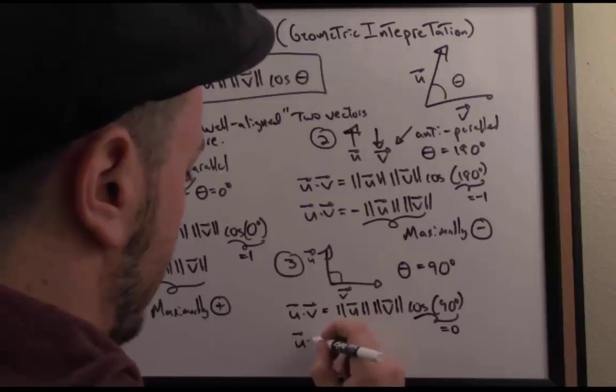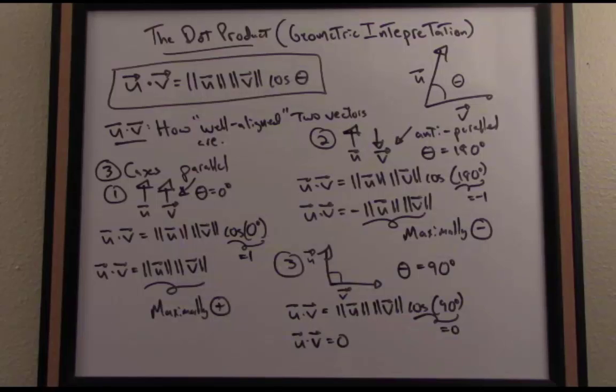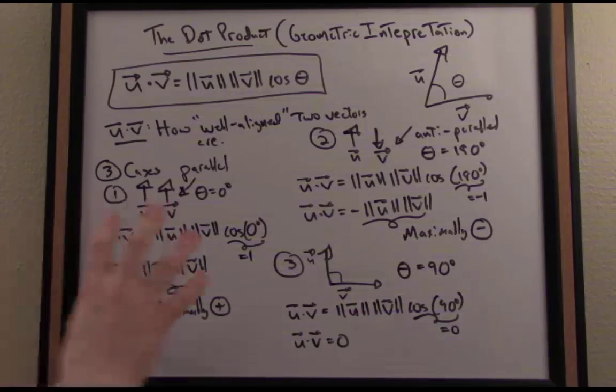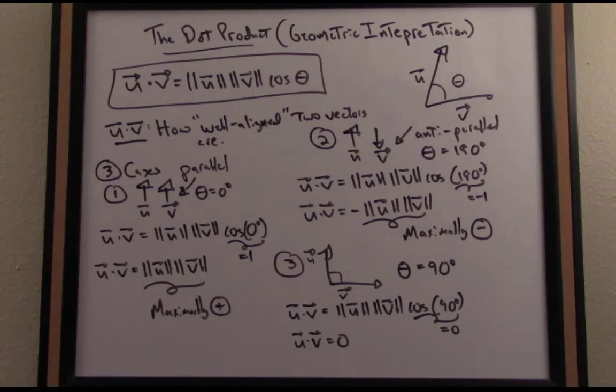So in this case, the dot product of u and v equals zero. We're exactly halfway in between. When they're parallel, we get a big positive number. When they're anti-parallel, opposite directions, we get a big negative number. And when they're right in between, the dot product is zero, when they meet at a right angle.